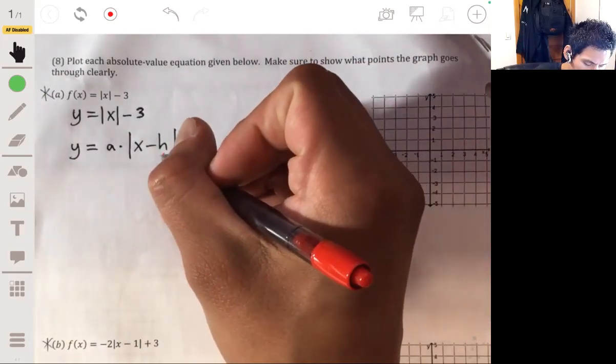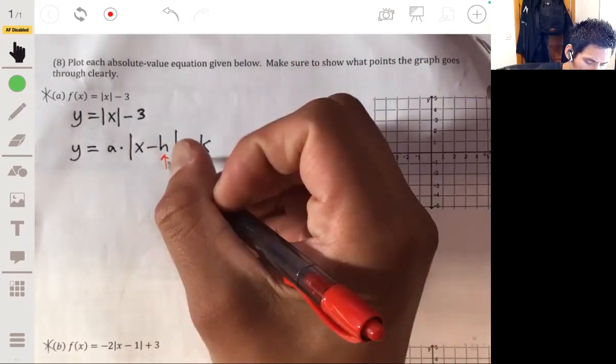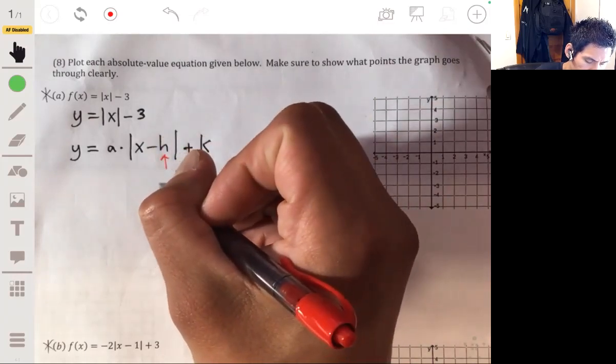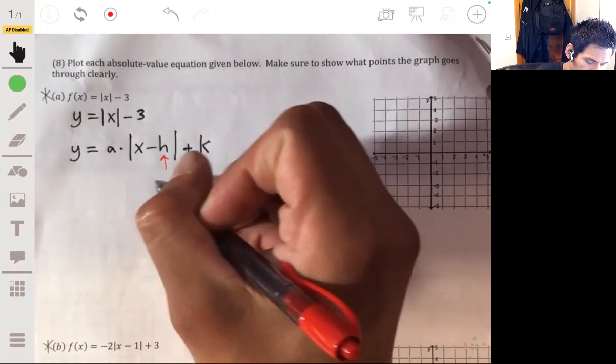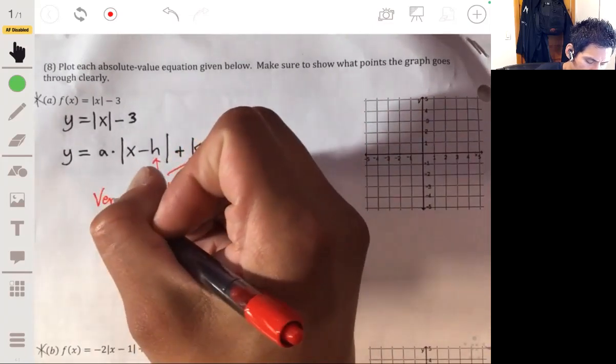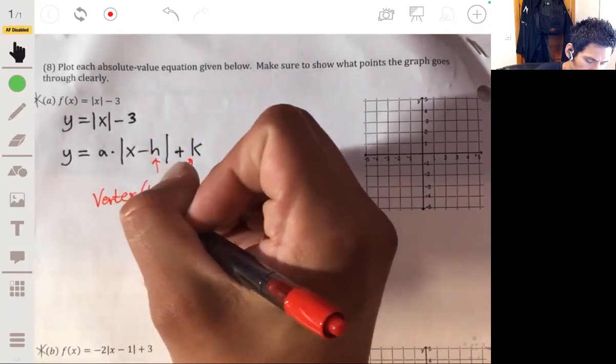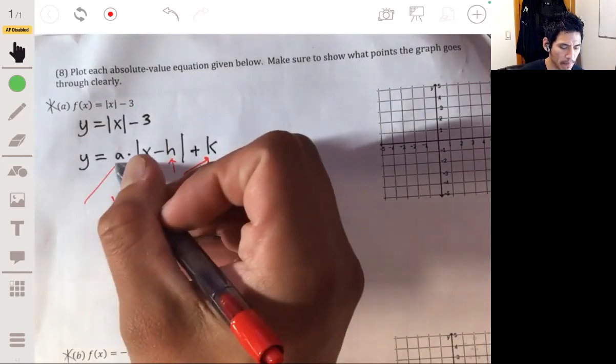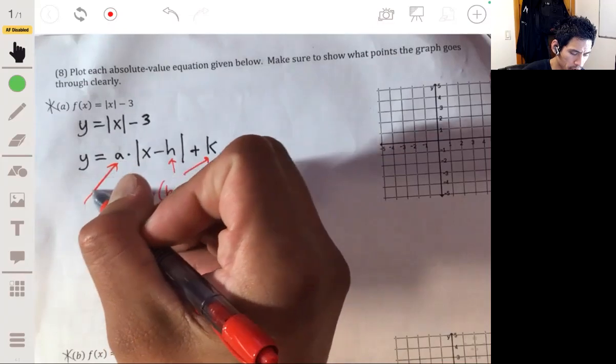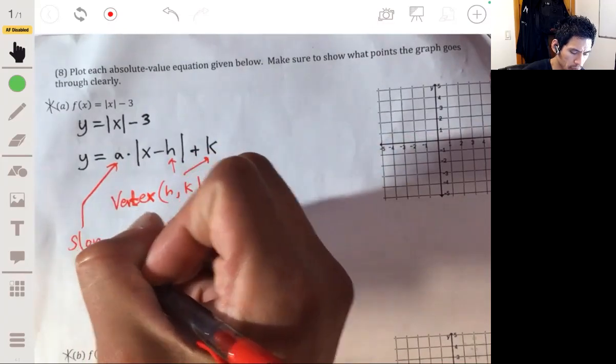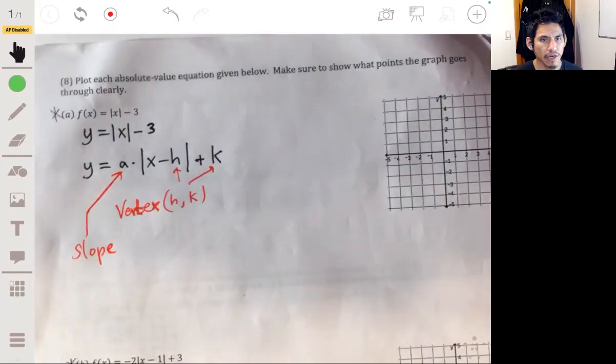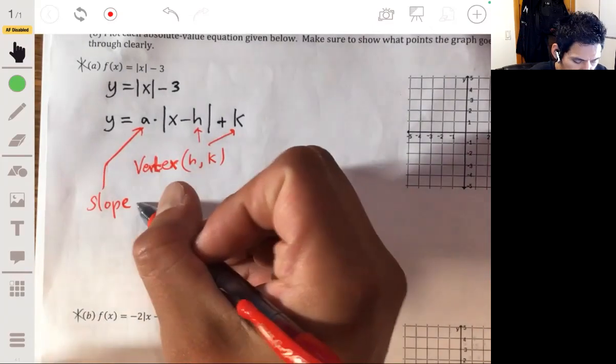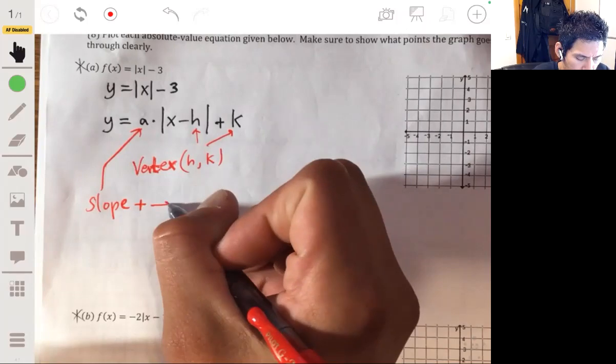And the h, k make up the vertex. Think of it this: h comma k is the vertex. And think of the a as the slope. However, it's a slope to one direction - slope positive slope to the right.